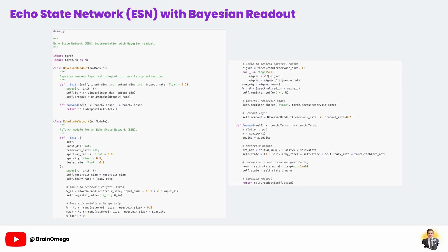Each forward pass will drop a random set of connections in the readout, meaning every prediction is slightly different. This property lets us sample from an approximate distribution of possible outputs for a given input, rather than producing a single, possibly overconfident answer. In practical terms, this helps our agent understand when it's uncertain about the best action.